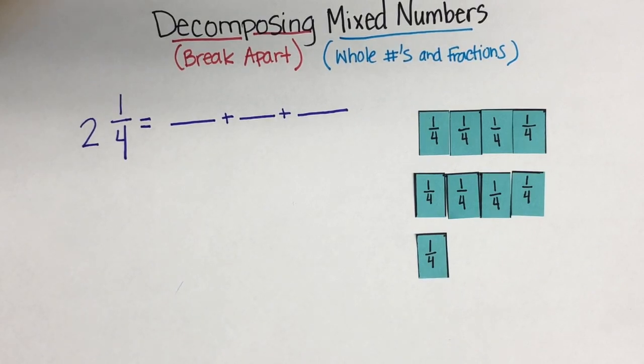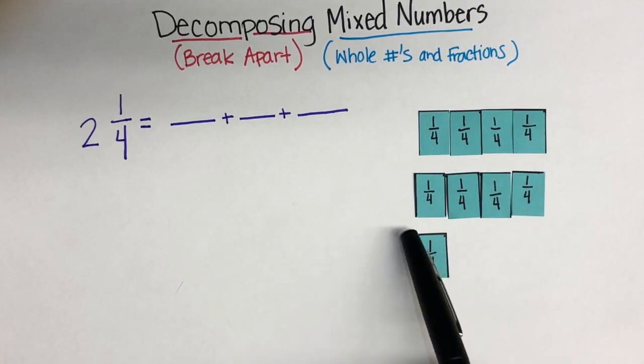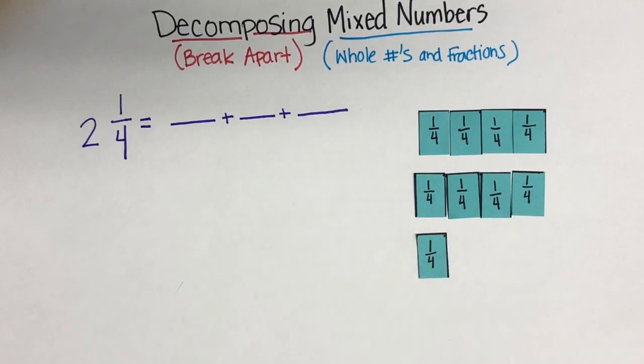So, right here on the right side, we have a model of 2 and 1/4. Which, if you look here, we have one whole plus another whole and 1/4. Which makes a total of 2 and 1/4. 2 wholes and 1/4.